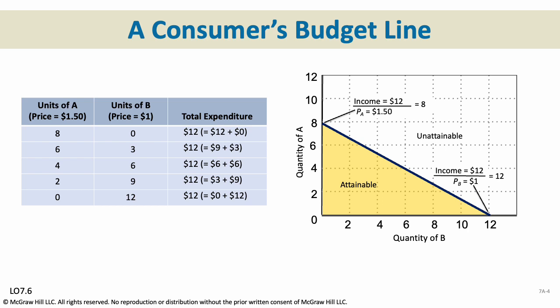The yellow shaded area is what is considered attainable, and anywhere in the white space is beyond the budget of this consumer. Along the line, you're using all of your money. Anywhere below the line in the yellow space, you have money left over, which is certainly possible. You cannot spend more than your budget, which is the white space.